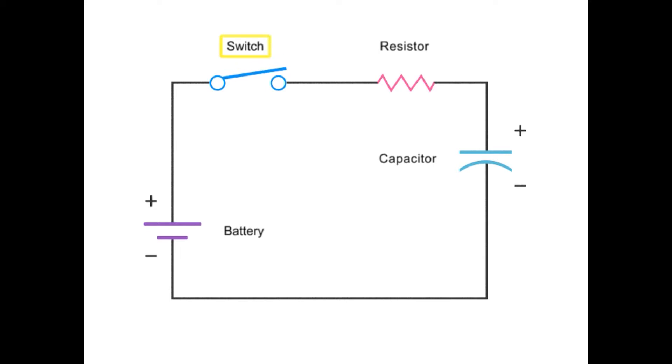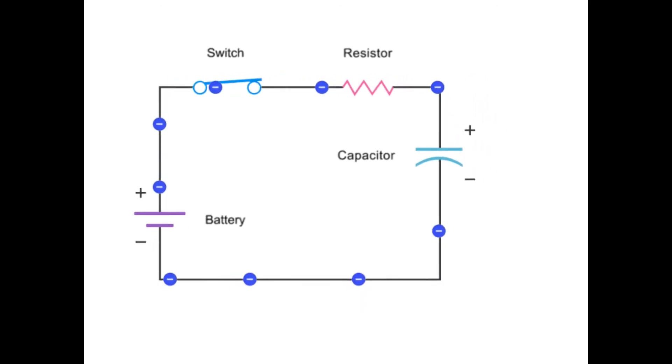When the switch is closed, electrons flow and charge builds up on the capacitor's plates. This causes the voltage across the capacitor to increase.